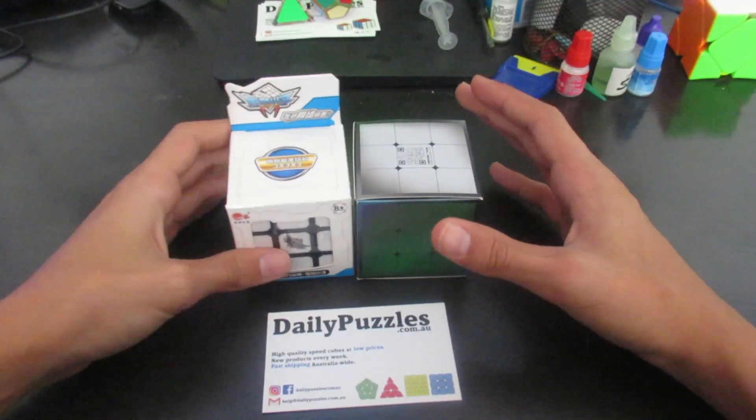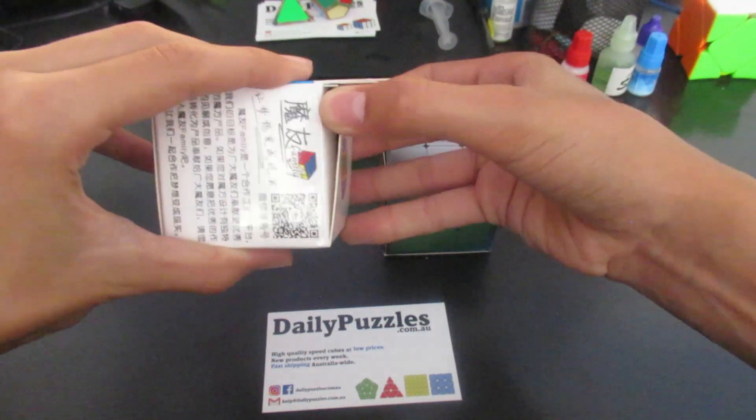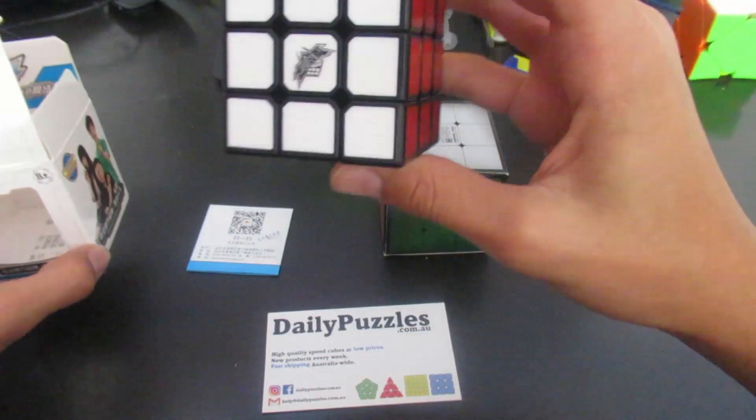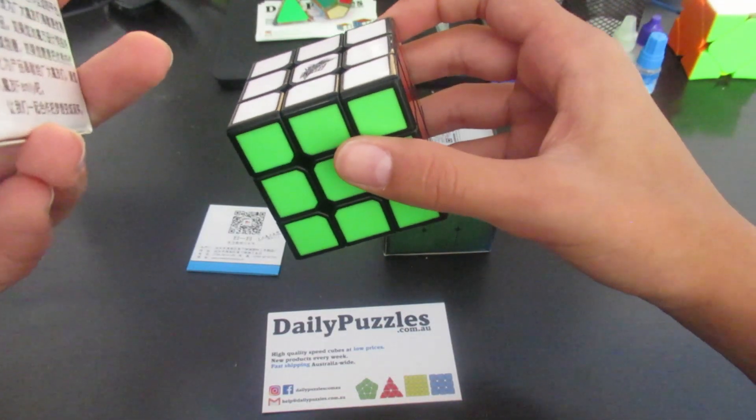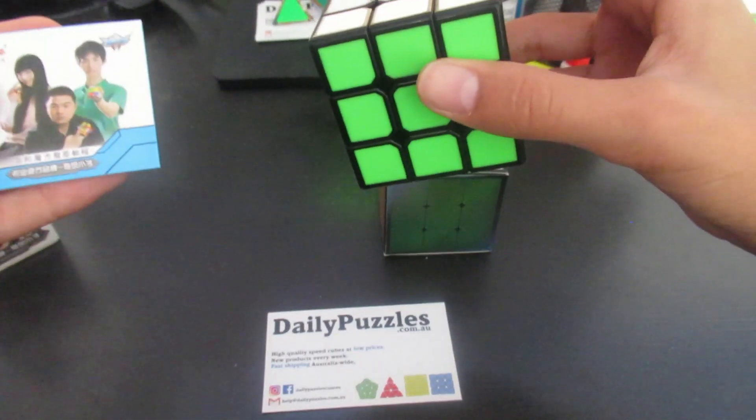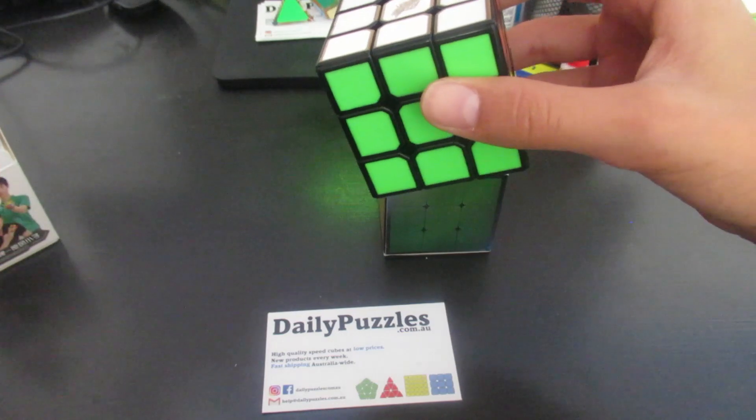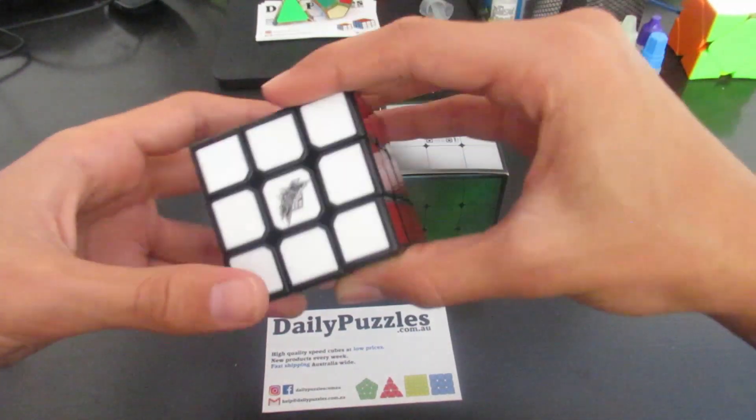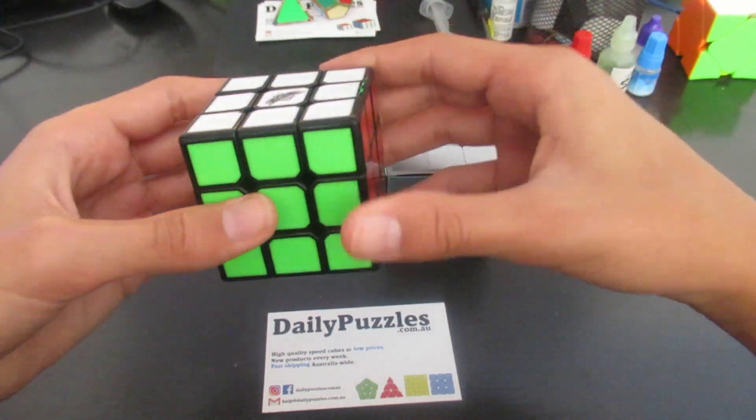Moving on to the last two 3x3s. So we'll go with Cyclone Boys. So I have no clue. Pretty sure this is one of the new Cyclone Boys 3x3s, but it doesn't say on here. Comes with pamphlet. Alright. I'm not sure what Cyclone Boys this is. I've seen this before though, and I'm pretty sure it's one of the new ones.